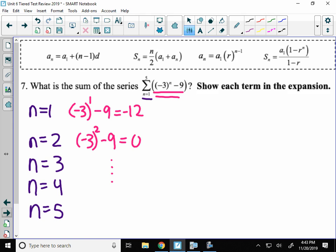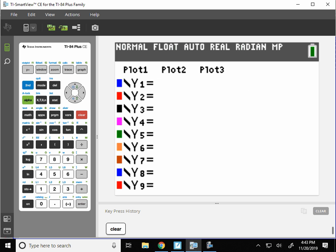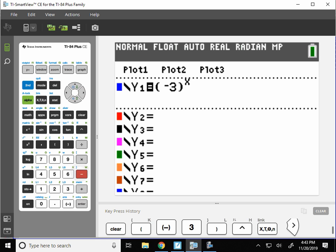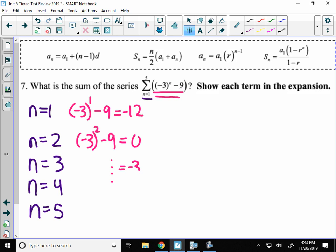The other way you can do this, if you want to make it faster, would be to type the equation into your y equals. So if I type in here negative 3 to the x instead of n, then minus 9. If I go to the table, see how at term 1 I got negative 12 and term 2 was 0? I can find 3, 4, and 5 just by looking here as well. So I would have the next 3 I'll write out will be negative 36, 72, and negative 252.